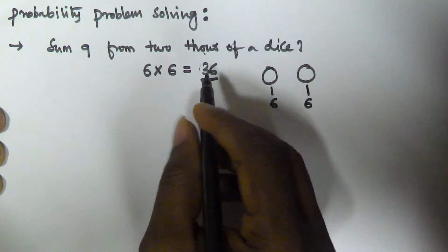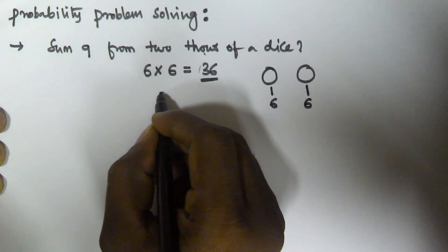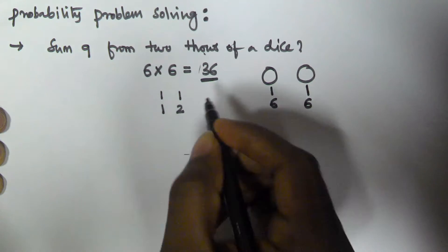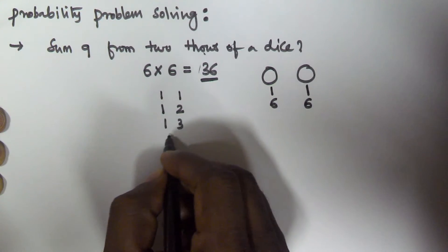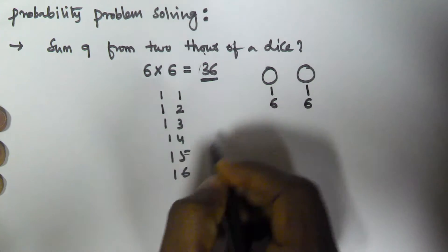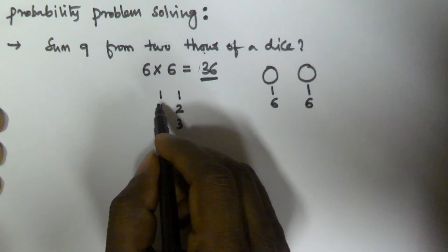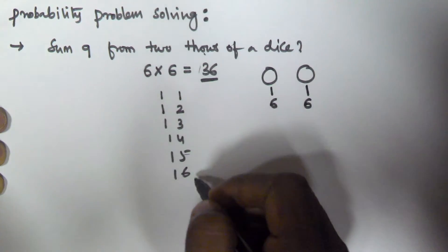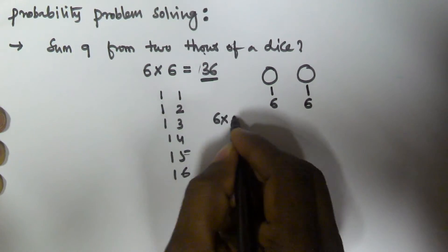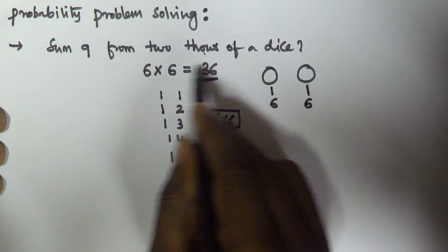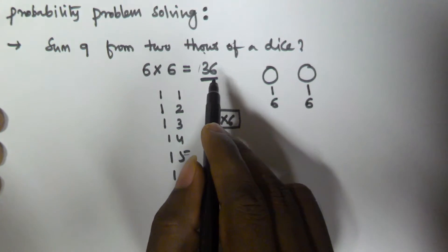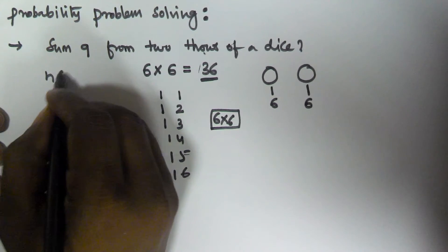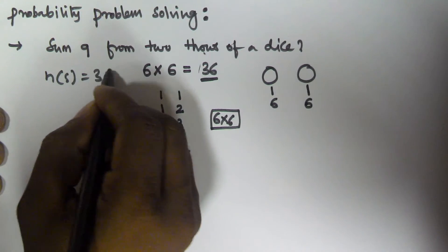So how do we get 36? On the first throw we can have 1 and the second throw also 1; first throw 1 and second throw 2; then 1,3 and 1,4 and 1,5 and 1,6. We repeat the same: on the first die we get 2 and the second throw gives 1, 2, … up to 6. So that is 6 into 6. The number of elements in the sample space, N(S), is 36.